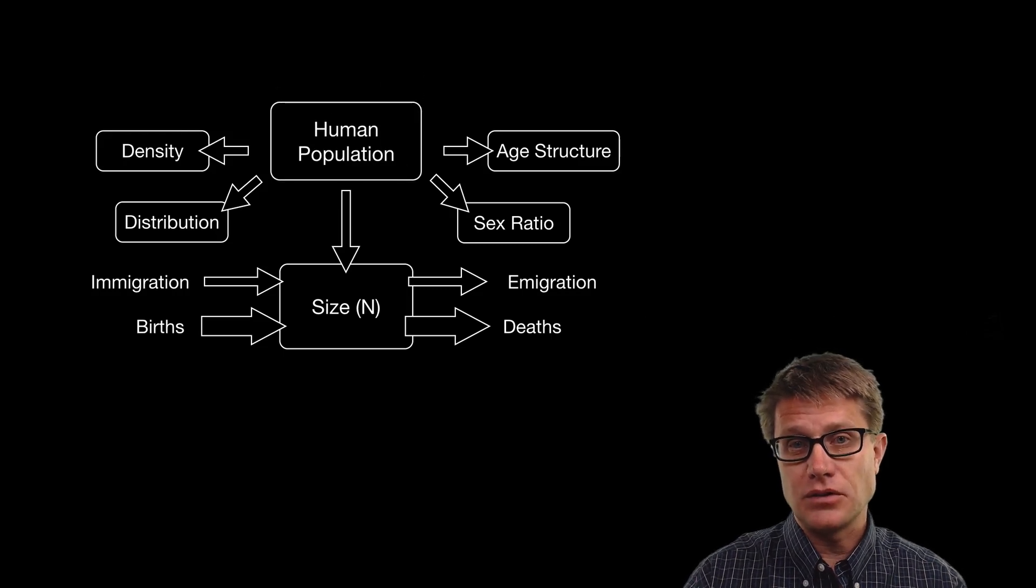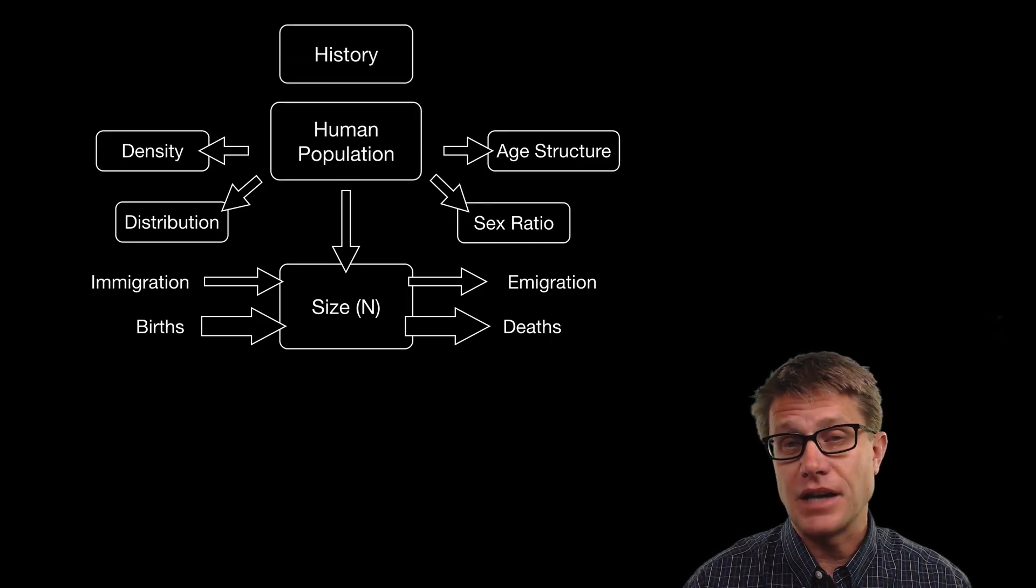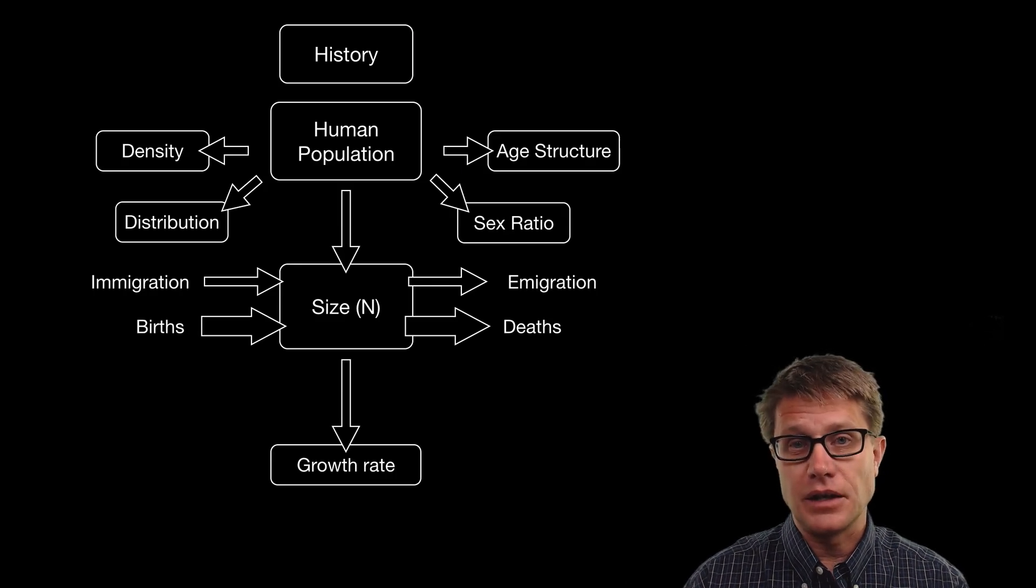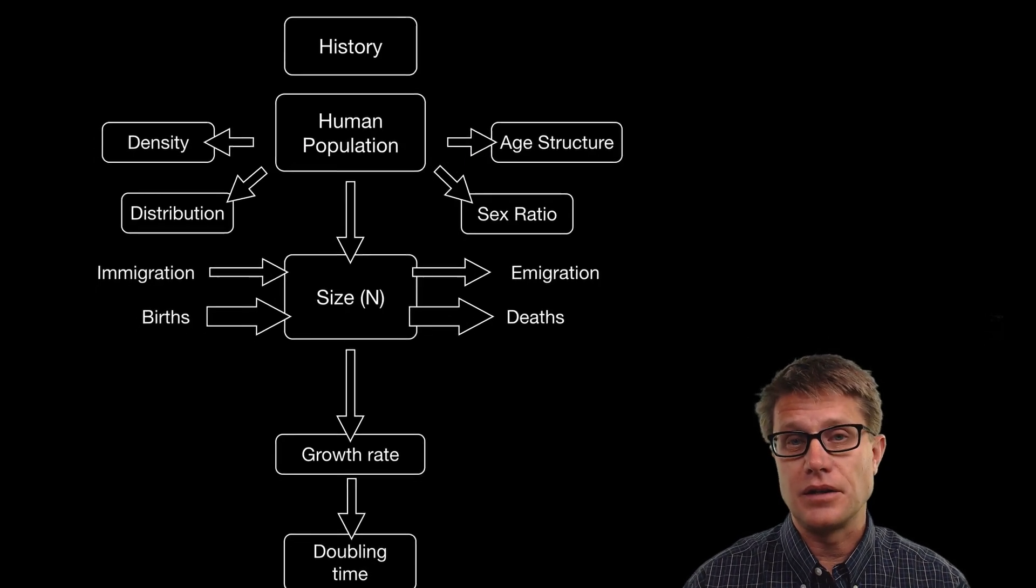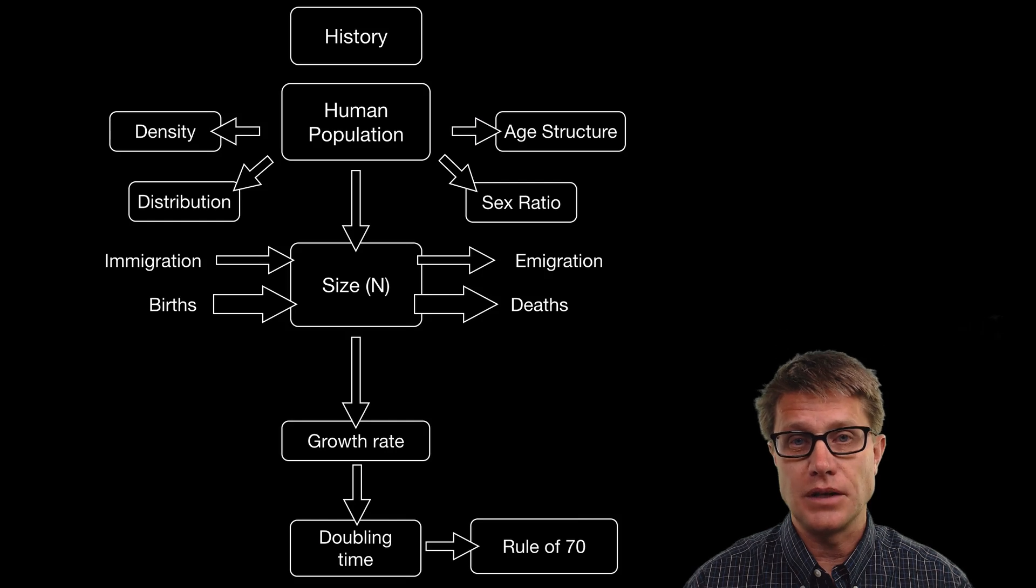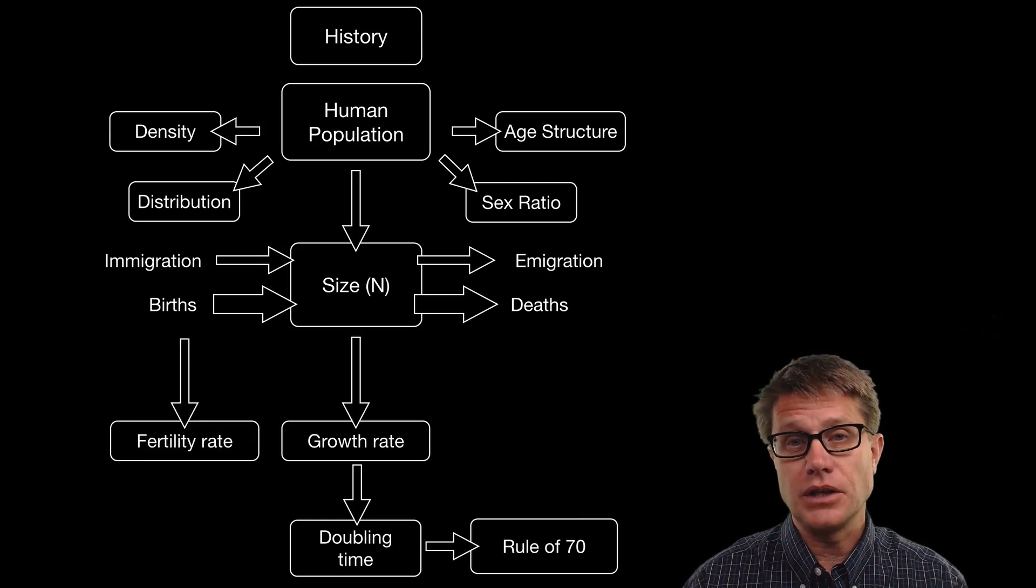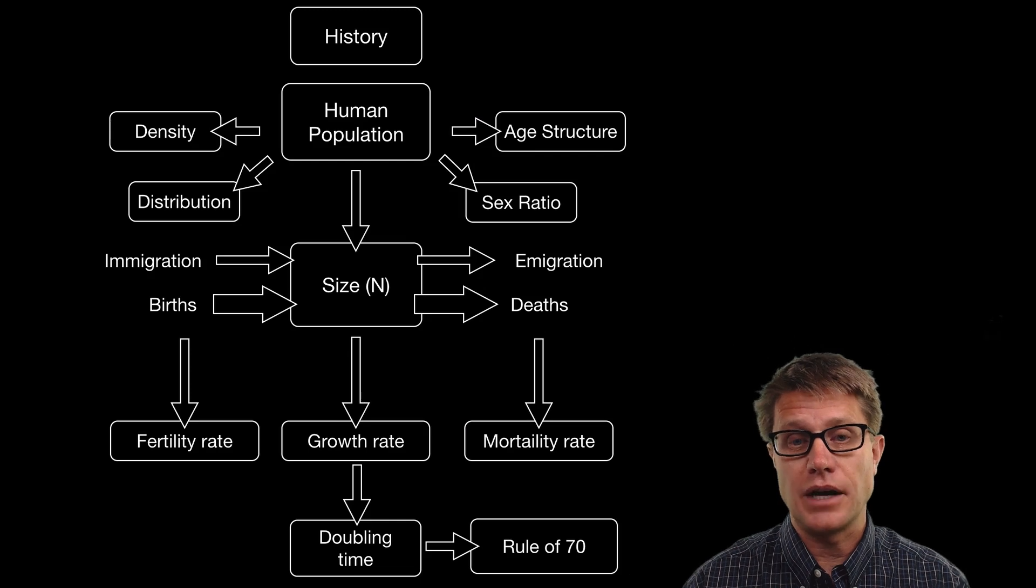We will start with density and distribution. We will then talk about the size and how that size has changed over time. It is very easy to calculate growth rate and now you know how to calculate the doubling time using the rule of 70.